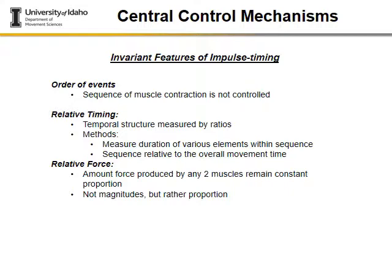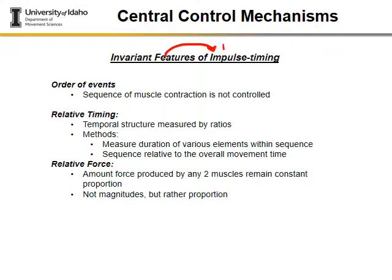The third invariant feature is relative force. Since force times time equals impulse, both have relative components. When we talk about invariant features, we are really talking about the relative impulse. Relative force means the amount of force produced by any two muscles remains in a constant proportion — there is a ratio component, so if one goes up, the other goes up by a function of that ratio, not by an absolute magnitude.